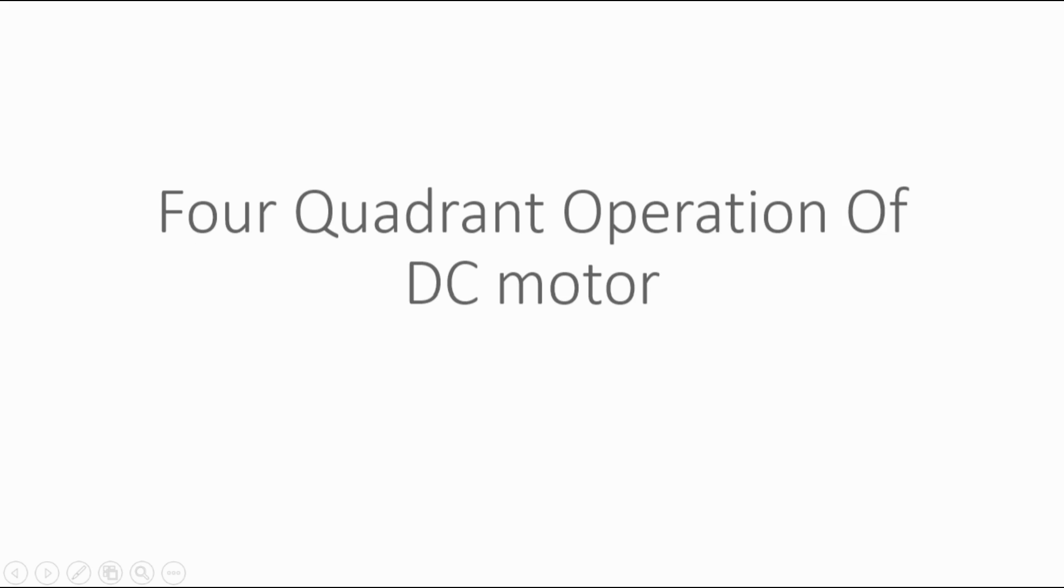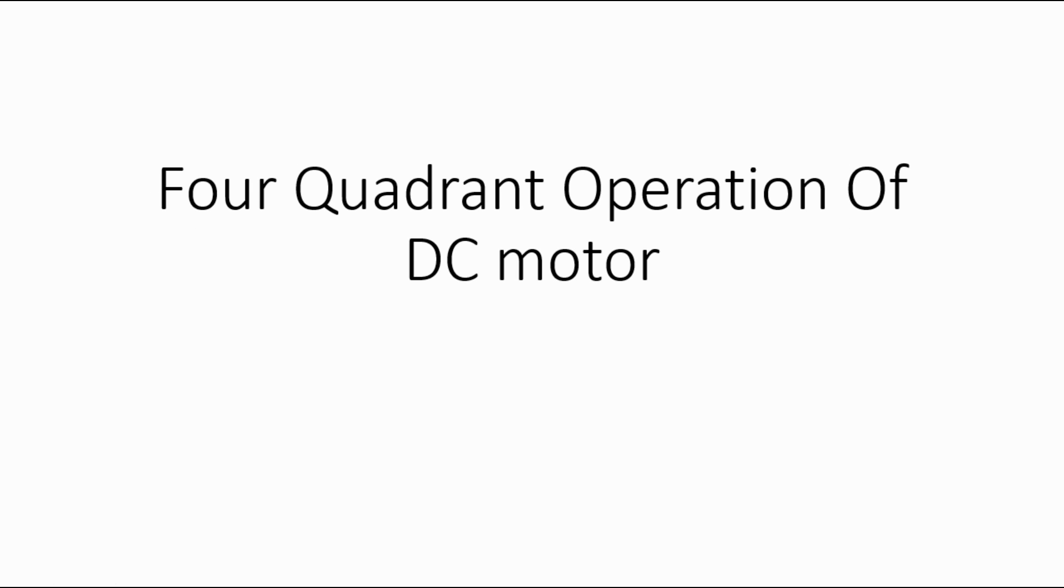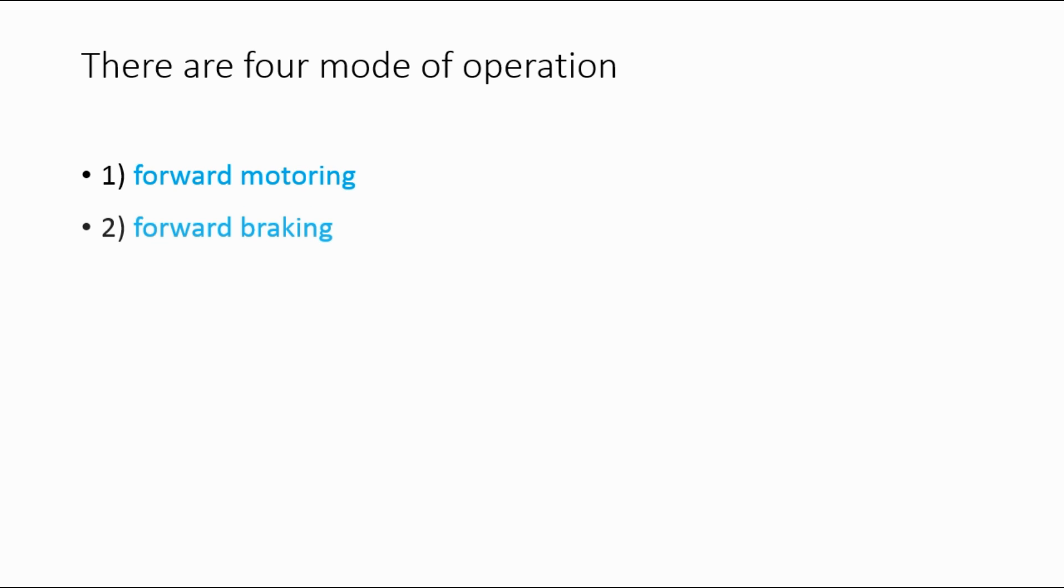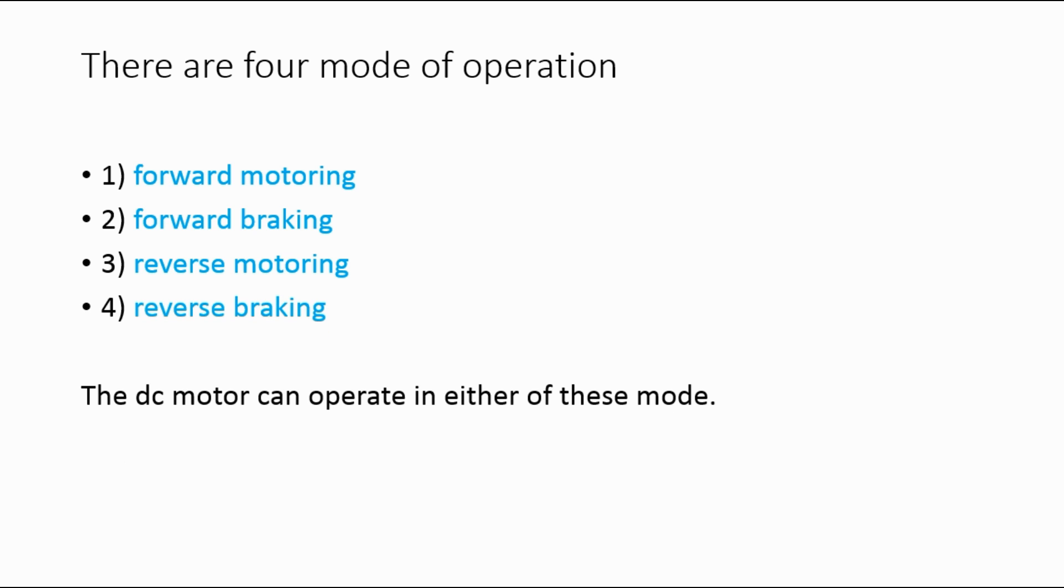Four quadrant operation of DC motor drive. There are four modes of operation: forward motoring, forward braking, reverse motoring, and reverse braking. The DC motor can operate in either of these modes.